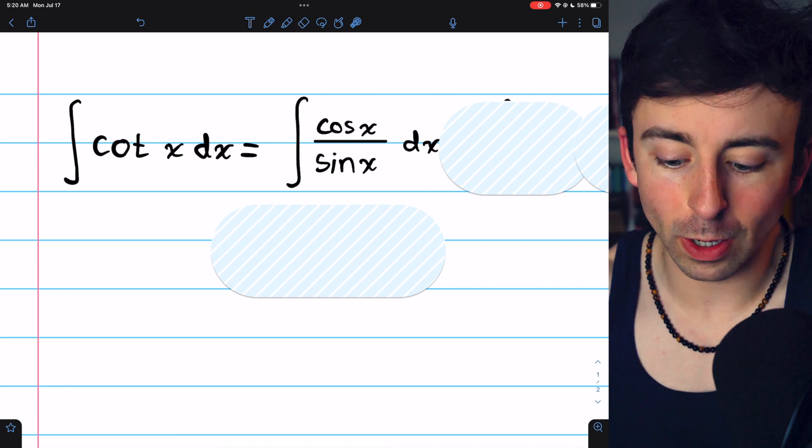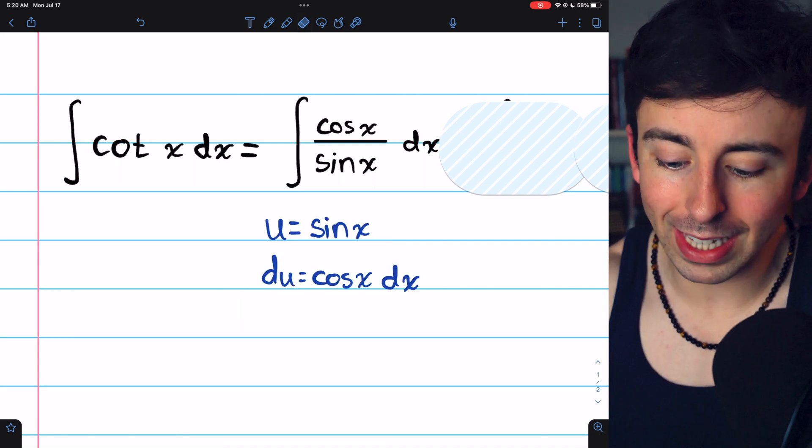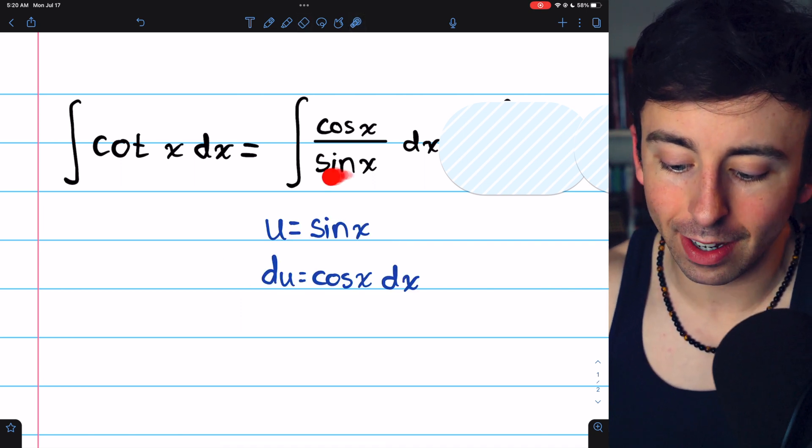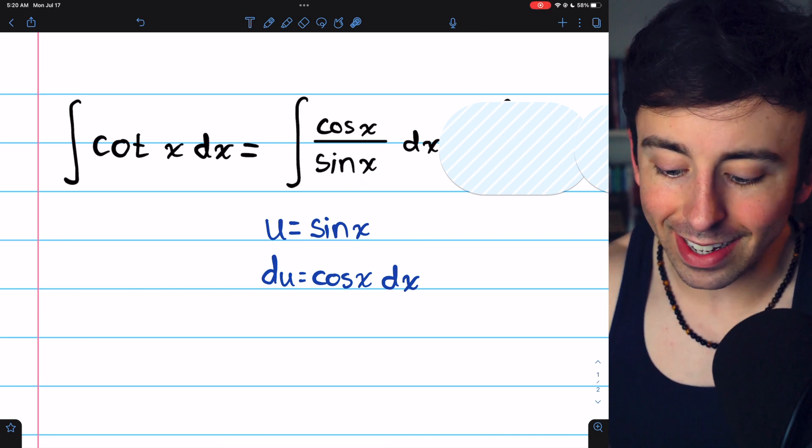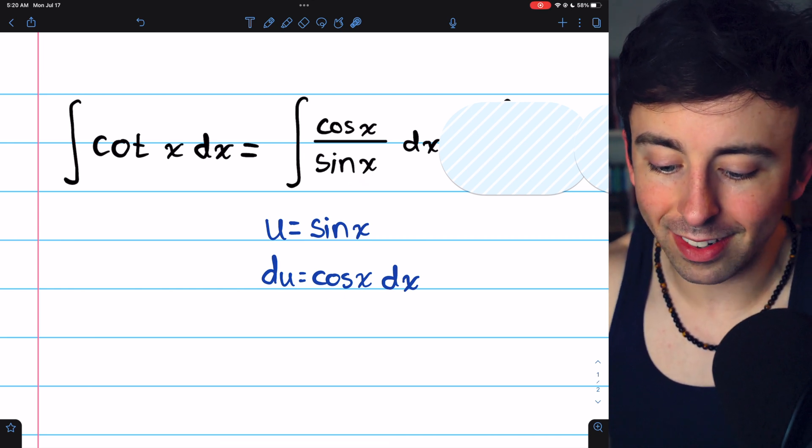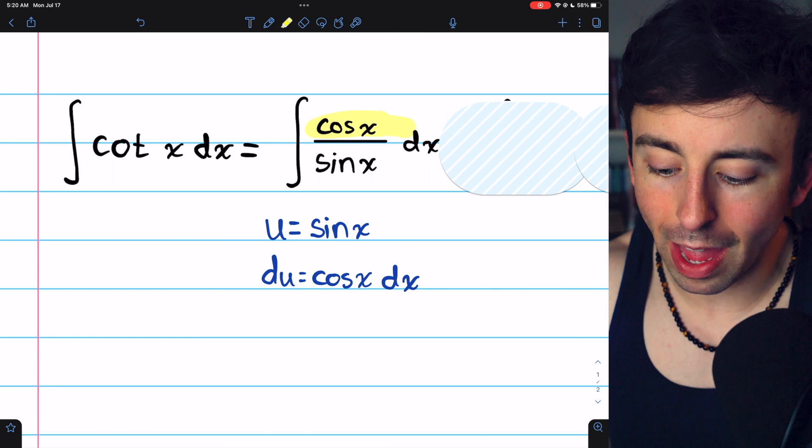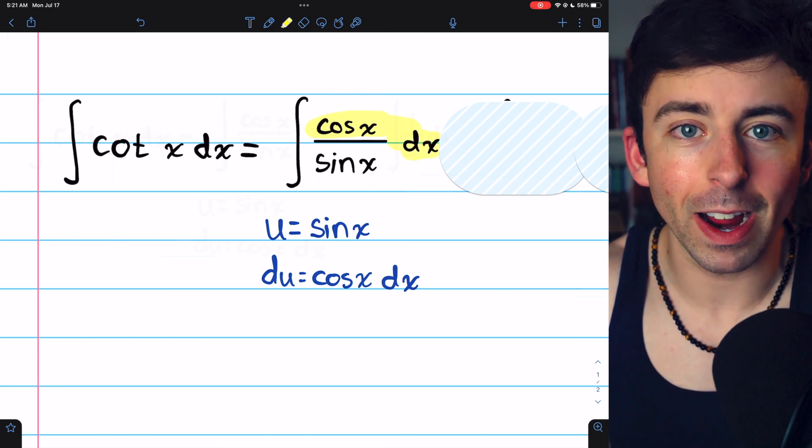That makes u substitution really easy, because if we let u equal sine of x, the denominator, then du is cosine x dx, which takes care of everything else in the integrand.